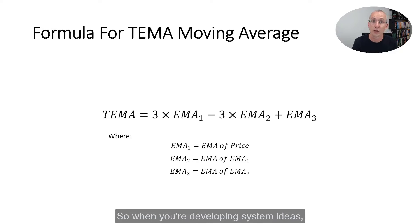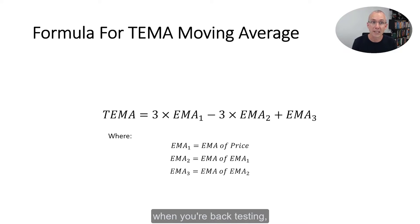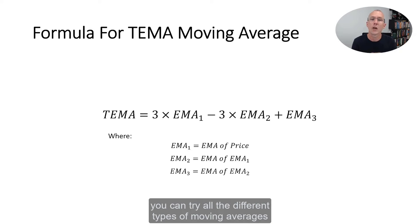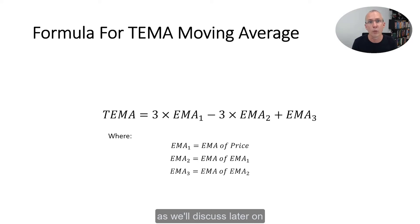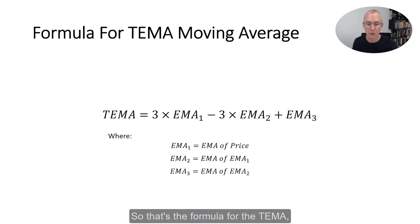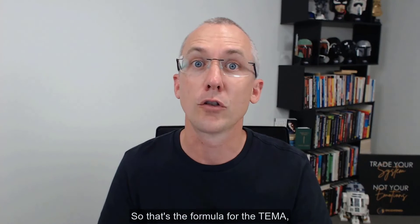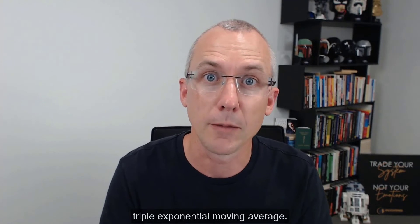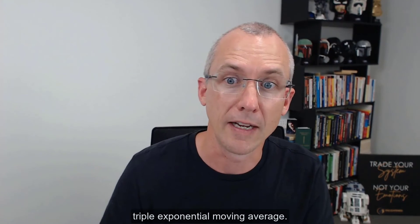When you're developing system ideas and backtesting, you can try all the different types of moving averages, as we'll discuss later on in this moving average video series. So that's the formula for the TEMA, or triple exponential moving average.